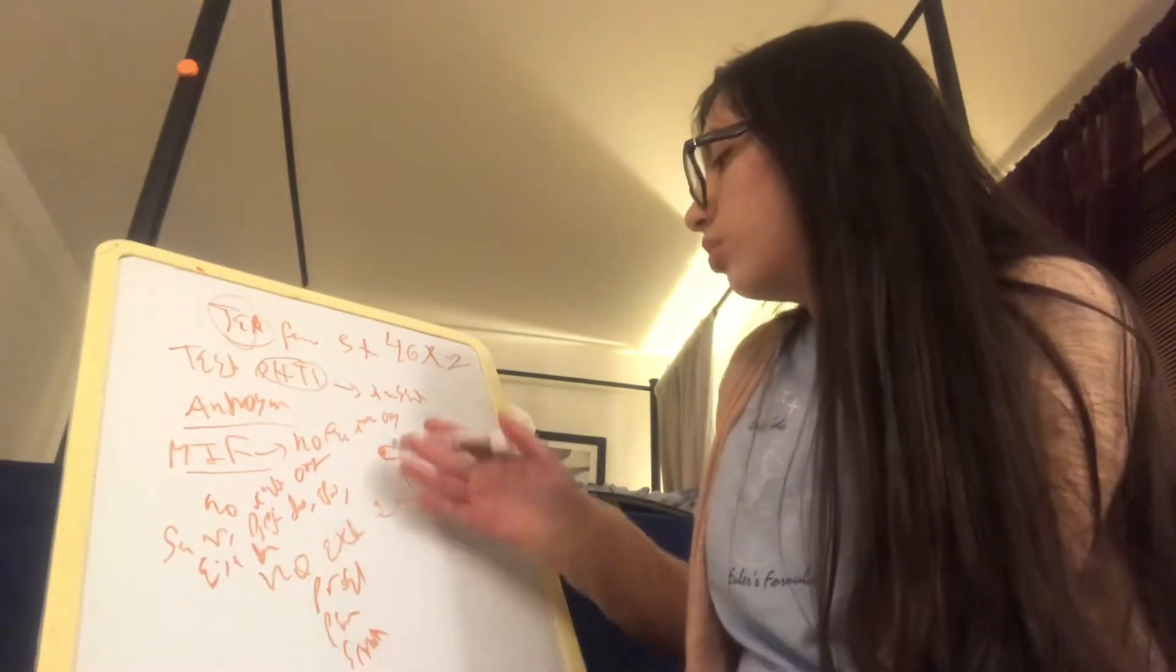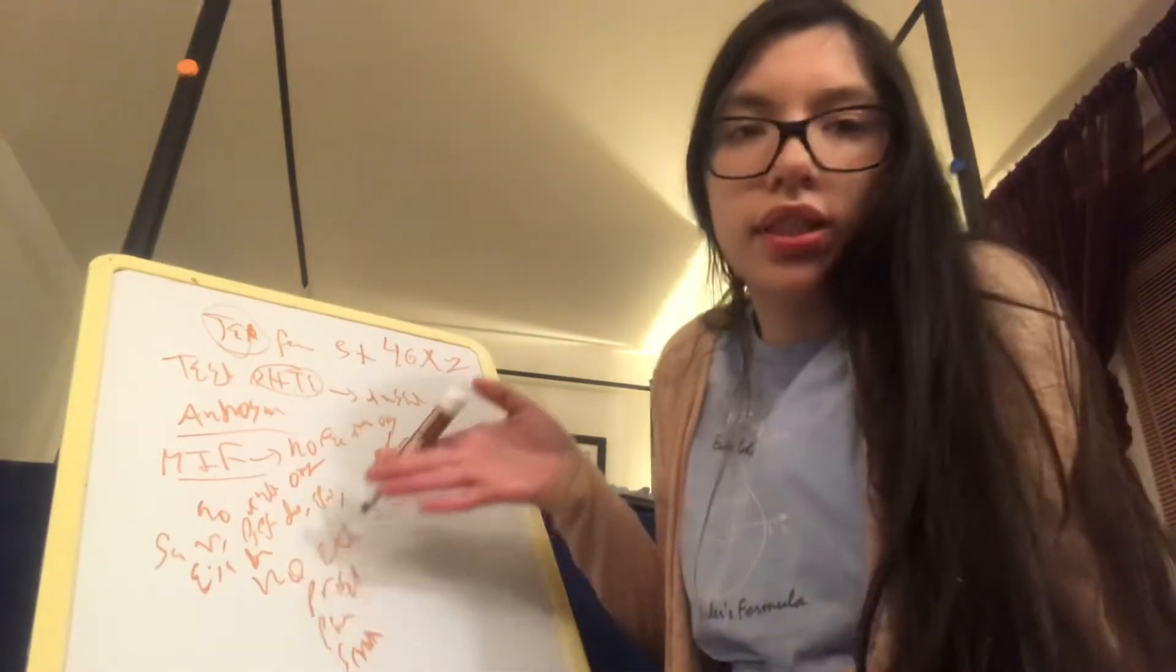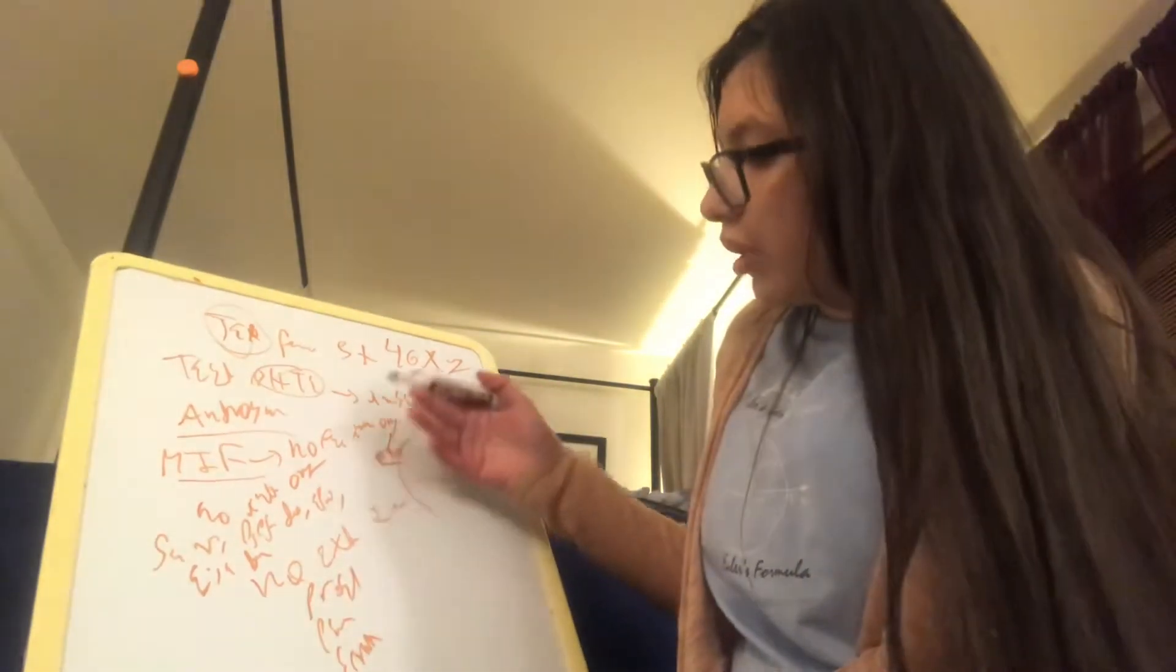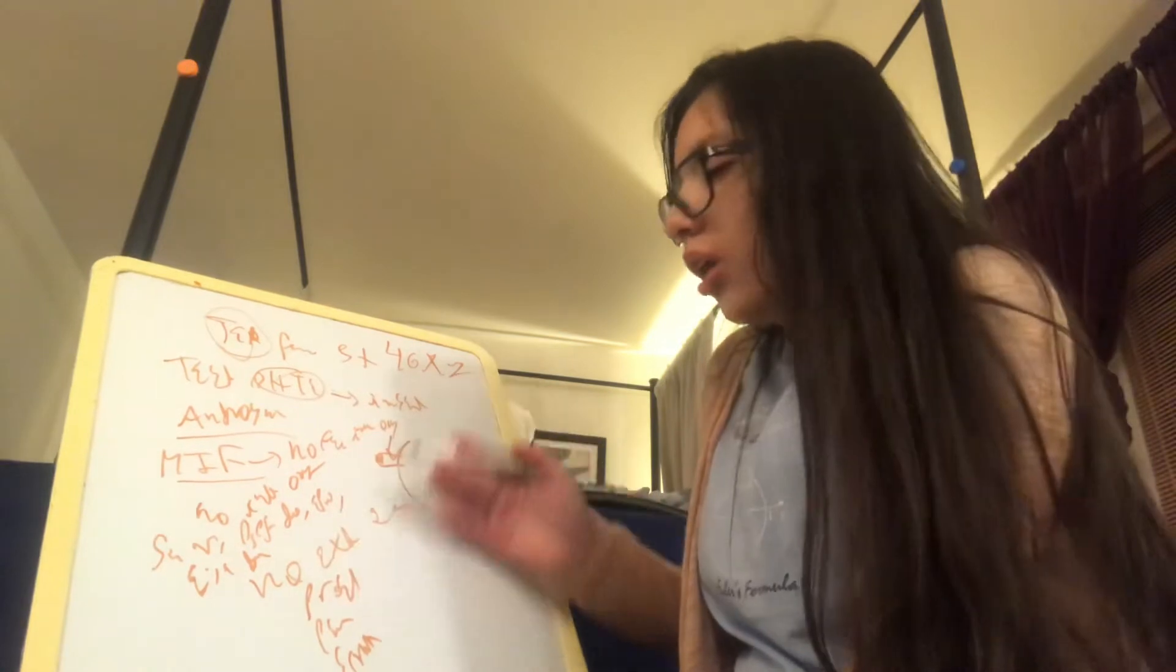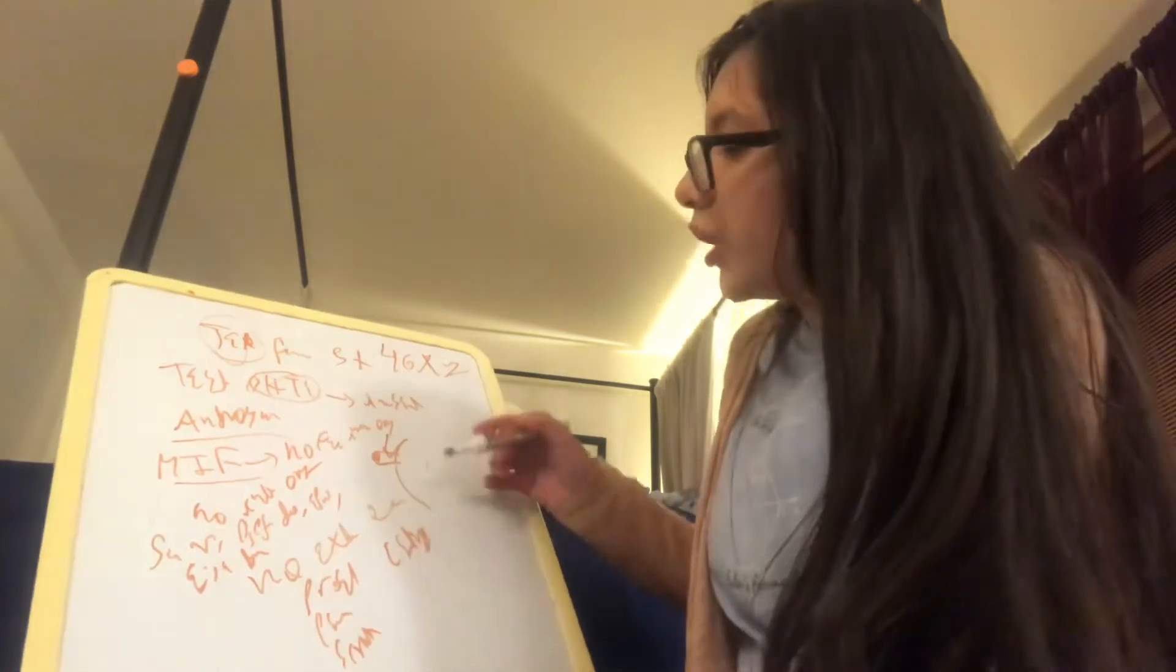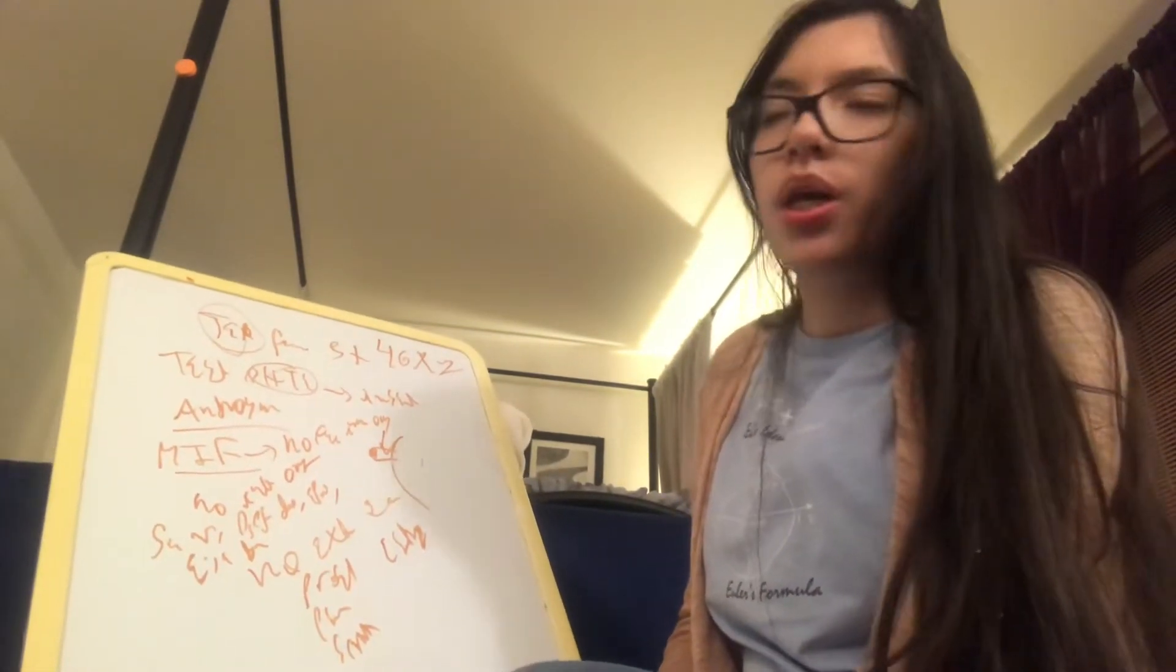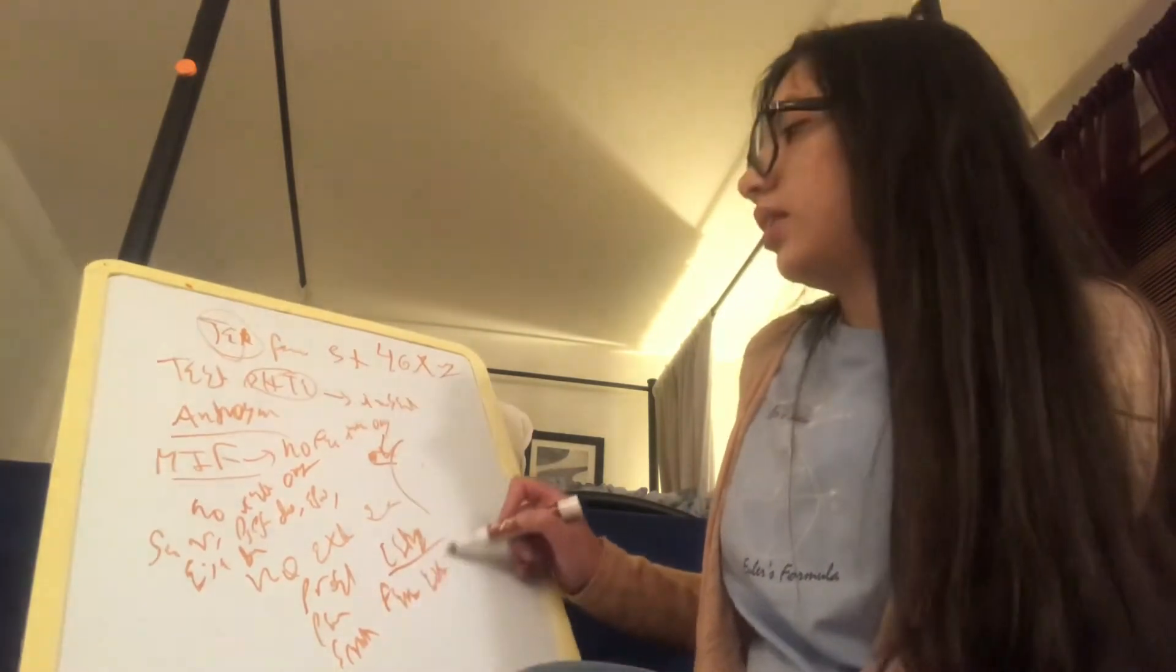But because the dihydrotestosterone has no effect because of the defective receptor, the patient has none of this. Now, in turn, because the patient has no one of these, there would be only unopposed estrogen effect because the patient has androgens but they are not effective. So the patient would have female external genitalia.